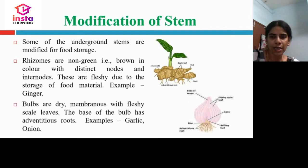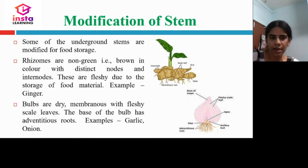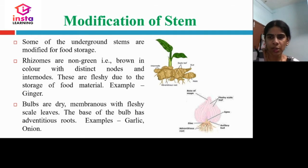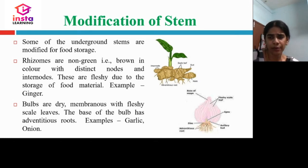Bulbs are dry and membranous with fleshy scale leaves, and the base of the bulb has adventitious roots. Examples are garlic and onion. In onion, you can see layers called fleshy scale leaves, which are formed from the base of the disc.